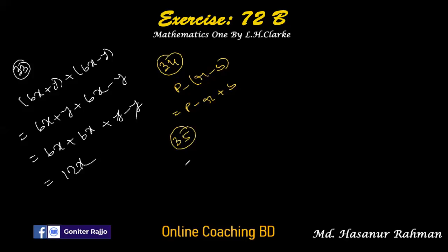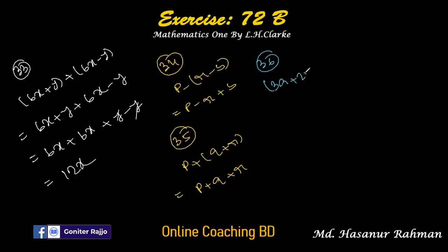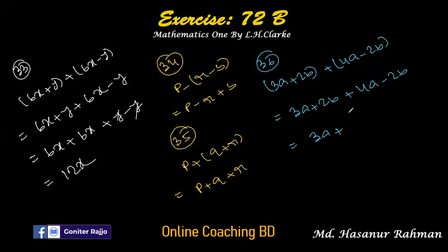Number 35 says p plus q plus r — very simple, just add p plus q plus r. Number 36 says 3a plus 2b plus 4a minus 2b. Removing the bracket: 3a plus 2b plus 4a minus 2b. Grouping: 3a plus 4a is 7a, and 2b minus 2b cancels. Answer is 7a.